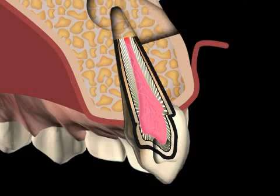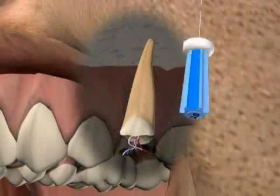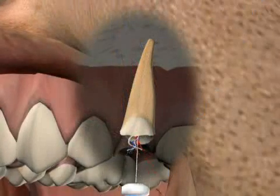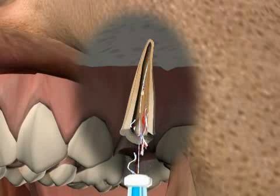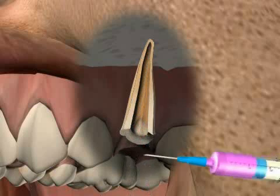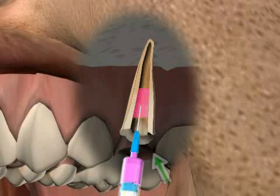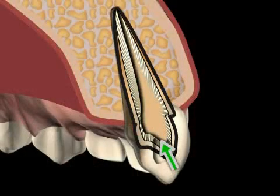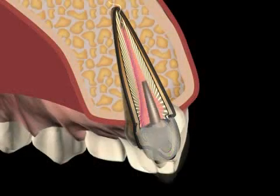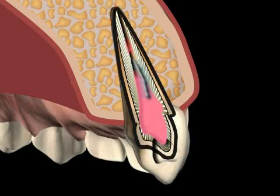Hence tooth canal filling and cleaning are a top priority both during root treatment and root tip resection. During orthograde root tip resection, canal cleaning and filling should be done from the top down. Sometimes access from above is not possible — for example, on pivot teeth or if a root canal instrument is chipped and stuck in the tooth interior.